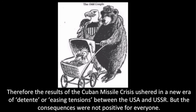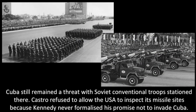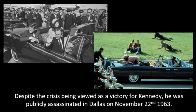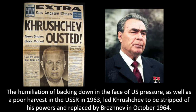The results of the Cuban Missile Crisis ushered in a new era of détente, or easing of hostility, between the USA and USSR. But the consequences were not positive for everyone. Cuba still remained a threat, with Soviet conventional troops stationed there. Castro refused to allow the USA to inspect its missile sites, because Kennedy never formally promised not to invade Cuba. The US continued its espionage programmes to kill or oust Castro, even after the missiles were gone. Despite the crisis being viewed as a victory for Kennedy, he was publicly assassinated in Dallas on November 22nd 1963. The humiliation of backing down in the face of US pressure, as well as a poor harvest in the USSR in 1963, led Khrushchev to be stripped of his powers and replaced by Brezhnev in October 1964.